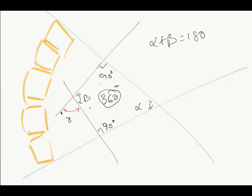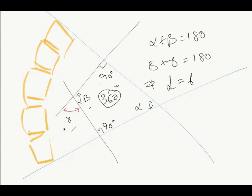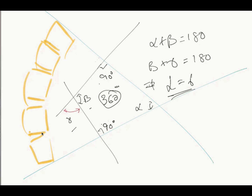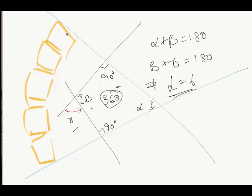If you look at this line, gamma and beta lie on a straight line, so beta plus gamma equals 180 degrees as well. Since alpha plus beta equals 180 degrees and beta plus gamma equals 180 degrees, that means alpha — the Cobb angle we want to know — is equal to gamma. This is how you measure the Cobb angle when the curvature is not so marked.